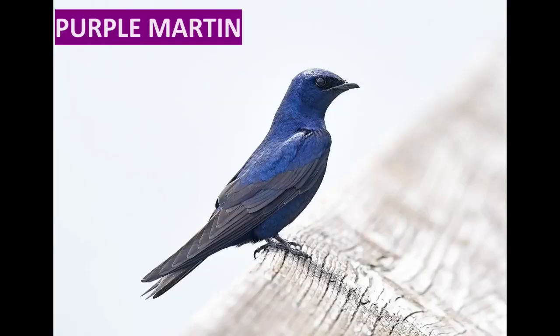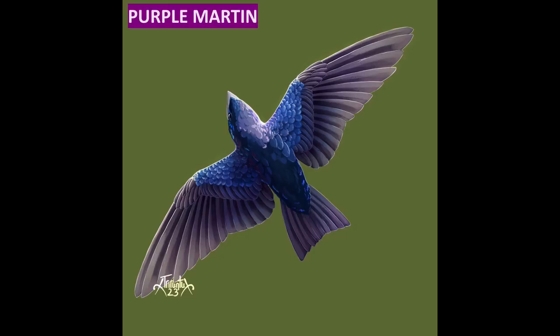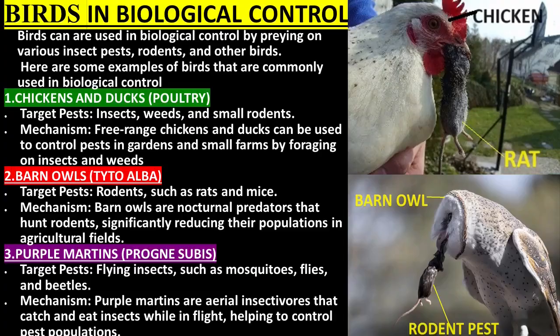Purple martins are aerial insectivores that catch and eat insects while in flight, helping to control pest populations. Target pests are flying insects such as mosquitoes, flies, and beetles.